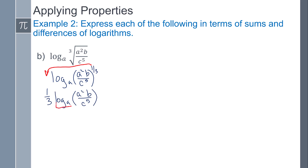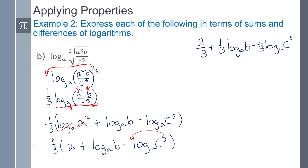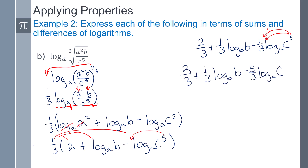Now inside the log, I can break it apart. The terms on top give two positive logs, and the term on the bottom gives a negative log. So I get log base a of a squared, plus log base a of b, minus log base a of c to the fifth. Log base a of a squared simplifies, leaving just 2. Then I can distribute the one-third to everything, and move the five to the front to get five-thirds.